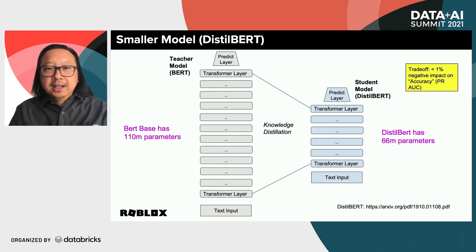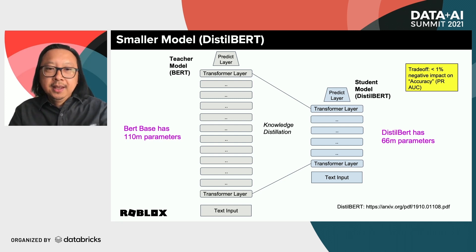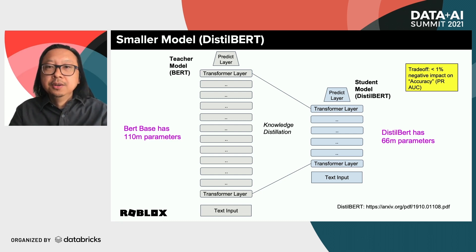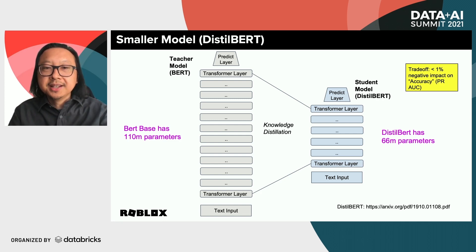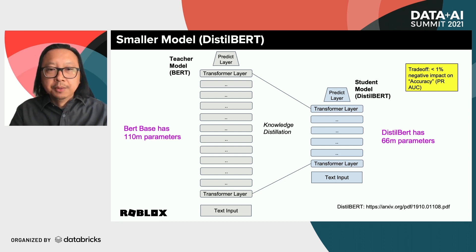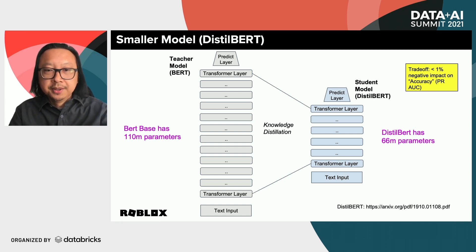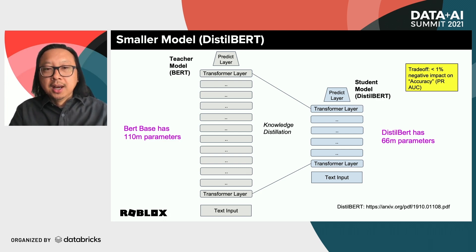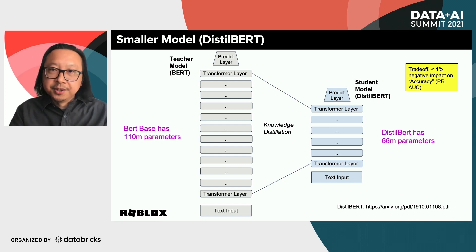DistilBERT is an example of a student model trained from a teacher model using a process called knowledge distillation. The teacher model is the BERT-base model, which has twice the number of transformer layers and almost twice the number of parameters. Not coincidentally, inferences on DistilBERT are twice as fast as BERT, and we only had to sacrifice about 1% of our accuracy as measured in precision-recall AUC to get that.